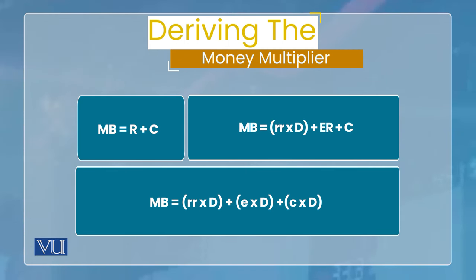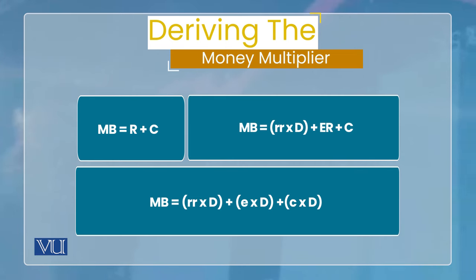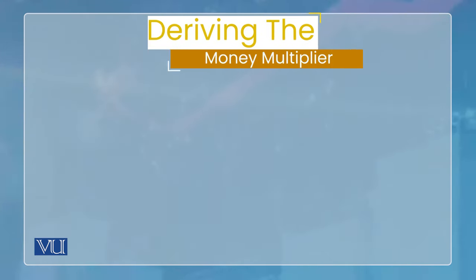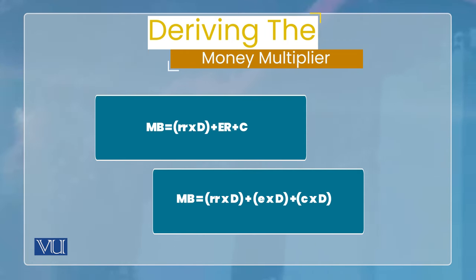تو finally جو monetary base بنی وہ ہوئی: MB = (rr × D) + (e × D) + (c × D)۔ اگر آپ دیکھیں تو ہر term میں D آ رہا ہے، تو ہم D کو common لے سکتے ہیں۔ جب common لیں گے تو: MB = (rr + e + c) × D۔